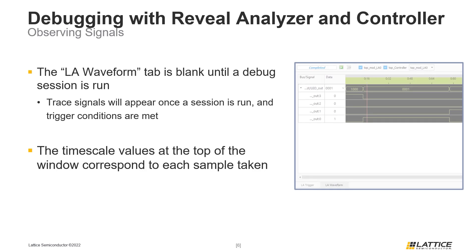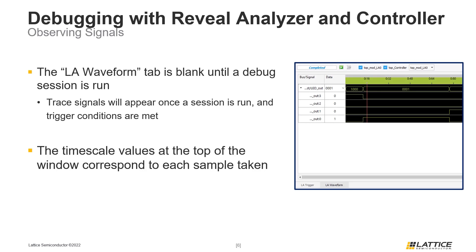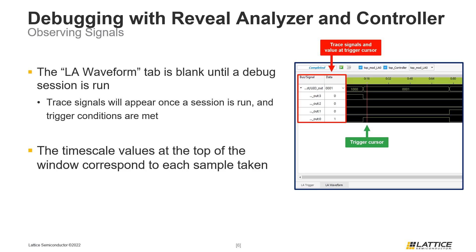The example on the slide displays the waveforms captured. The waveform window is fairly simple: on the left side are the trace signals captured from the debug session, and next to each trace signal is the value at the position the trigger cursor is located. The time scale at the top does not correspond to any time unit but instead corresponds to the number of samples. For example, the value at 016 is the 16th sample taken. How many samples and how trace signals are recorded can be configured using the LA Trigger tab.